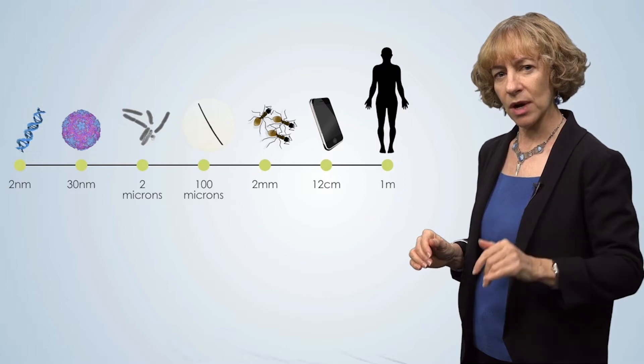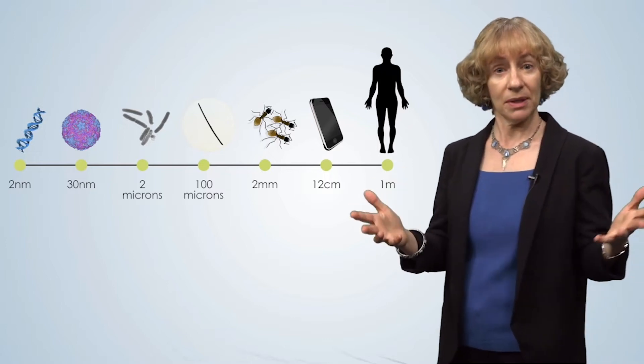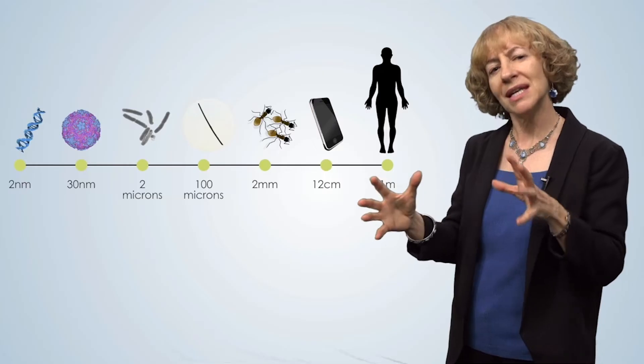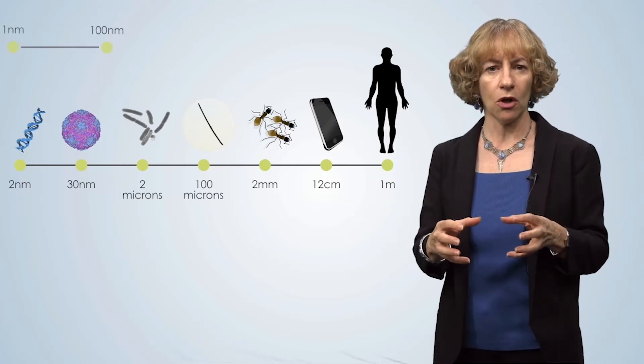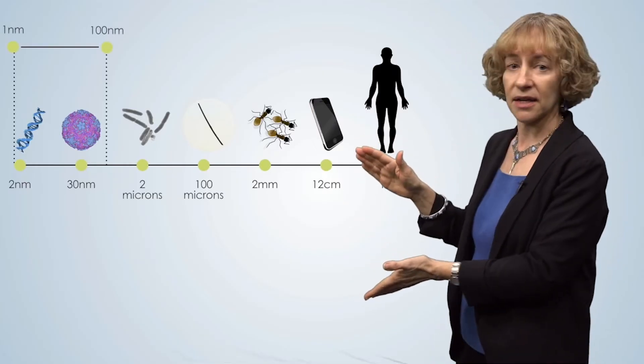So back to our first question, nano, meaning 1 billionth, describes feature sizes that are about 100 nanometers and smaller, which is this left side of the scale bar.